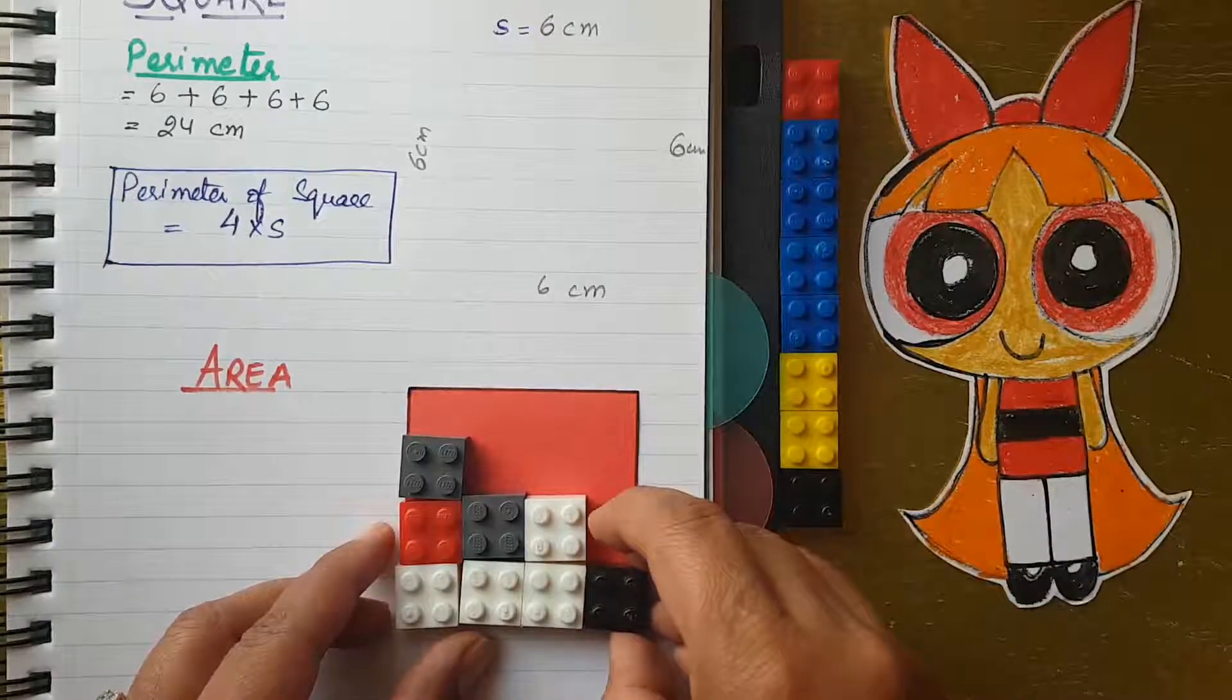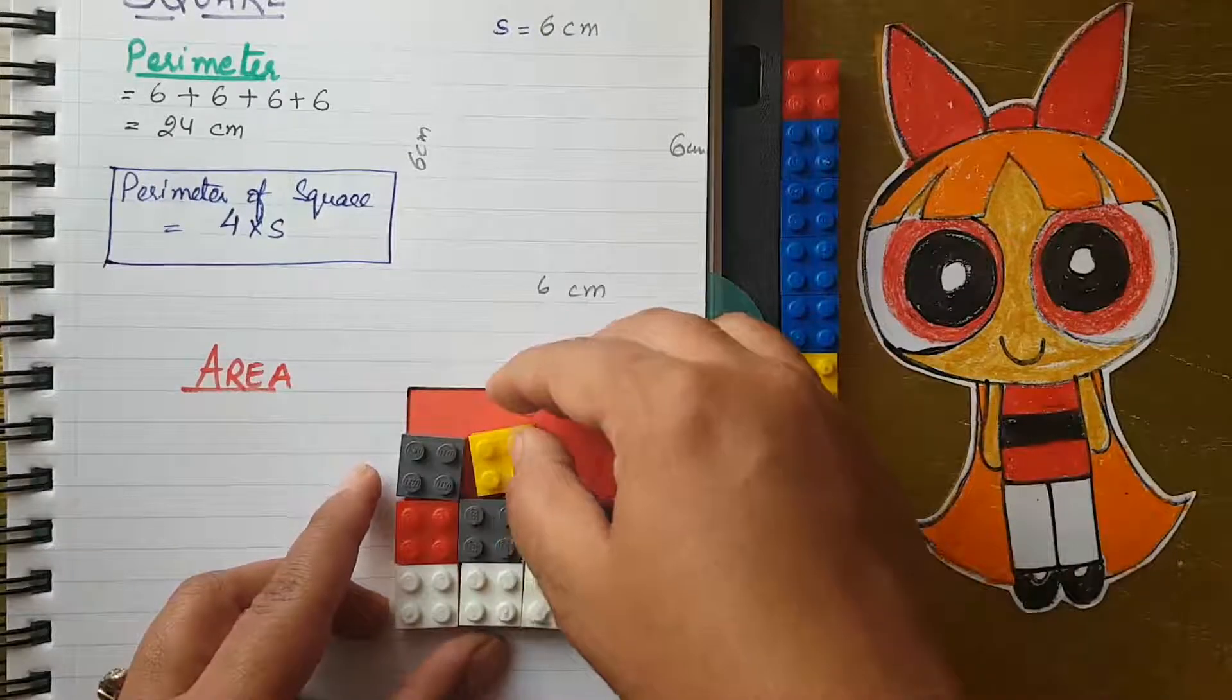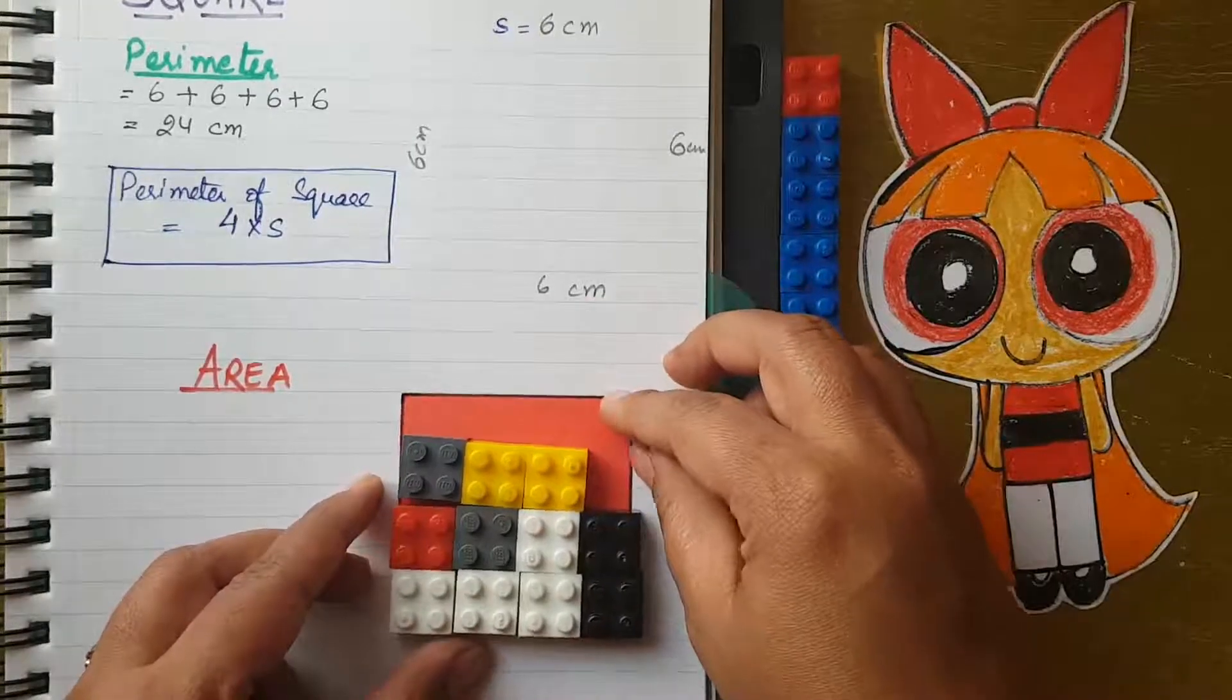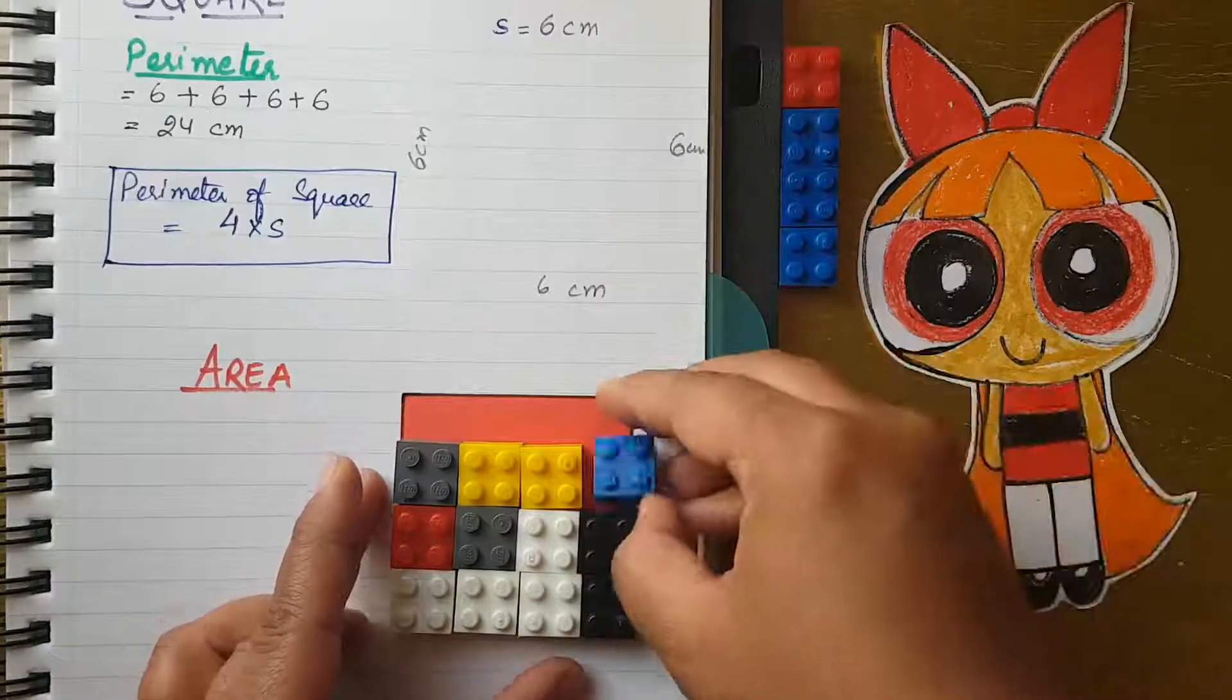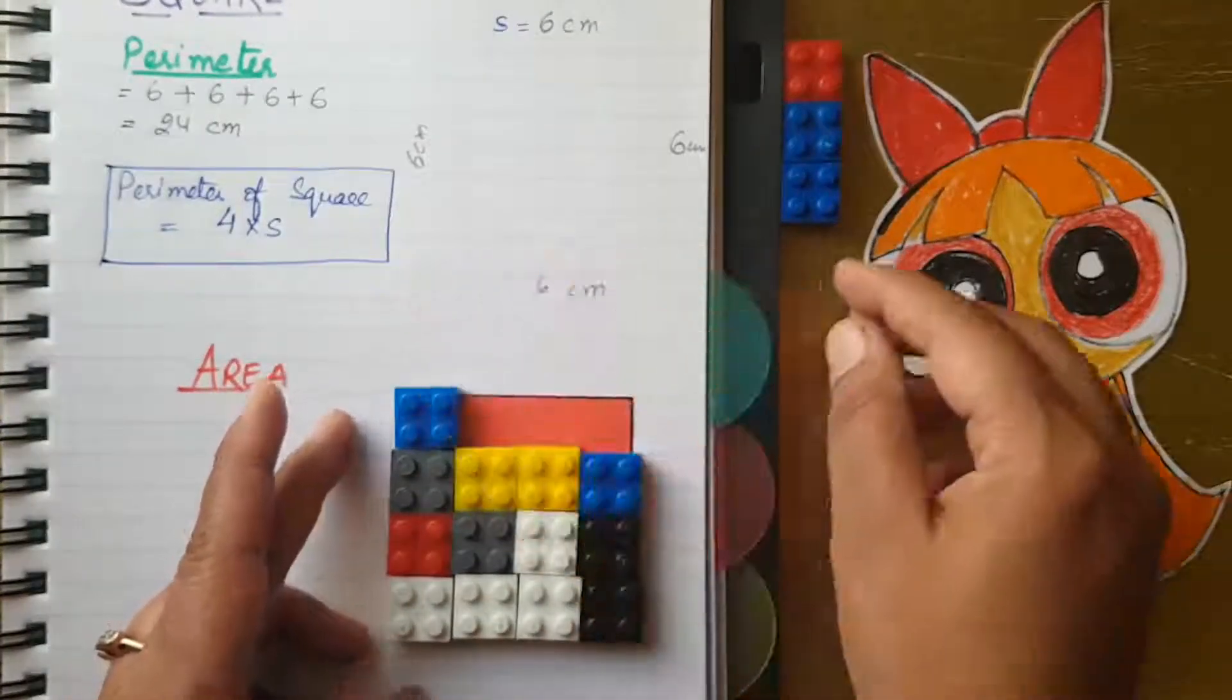If you have Legos, you can use Legos. I use Legos, but take all the shapes in the same size. Look what I did. I have all Legos and I just filled this square with the help of Legos.